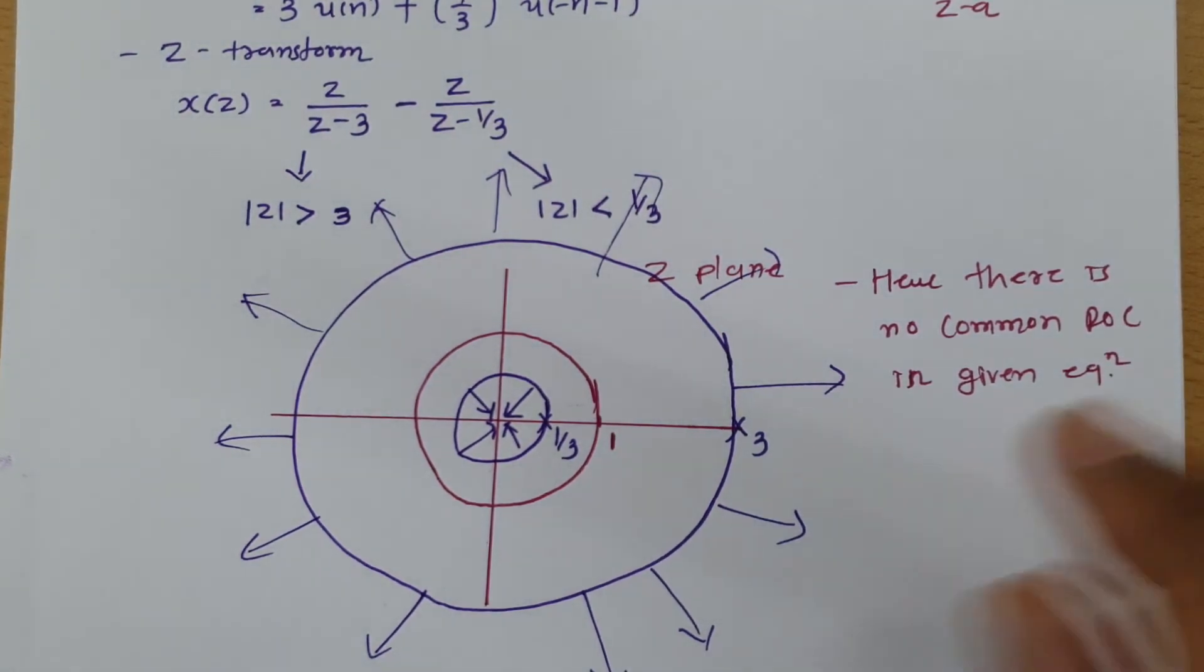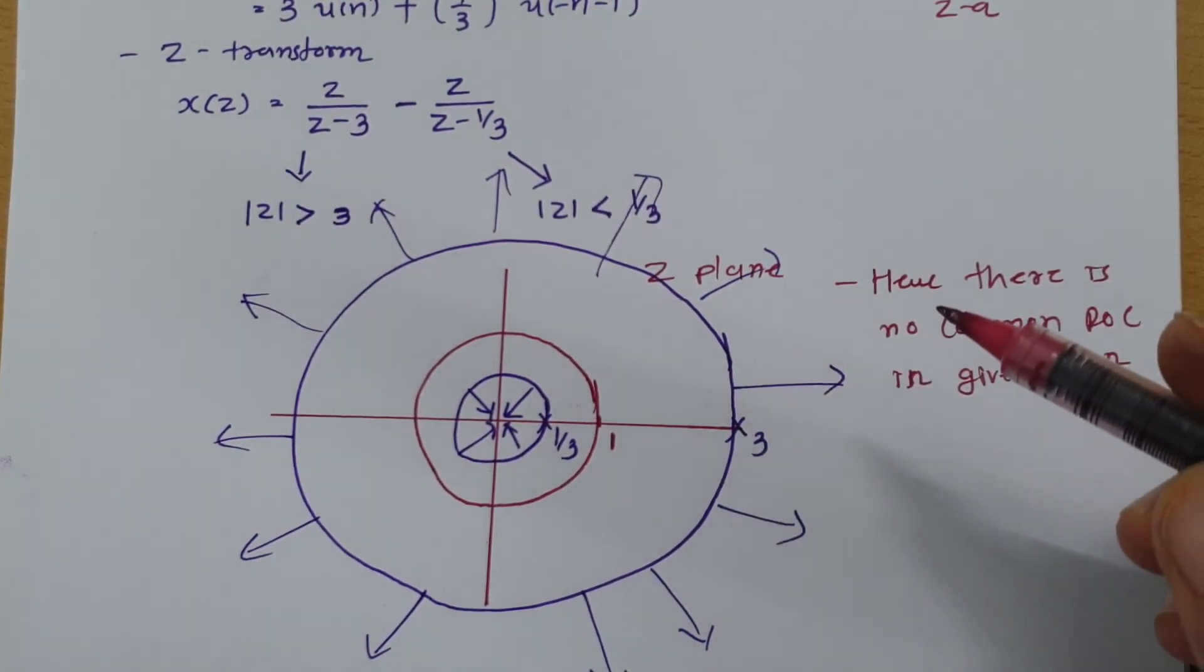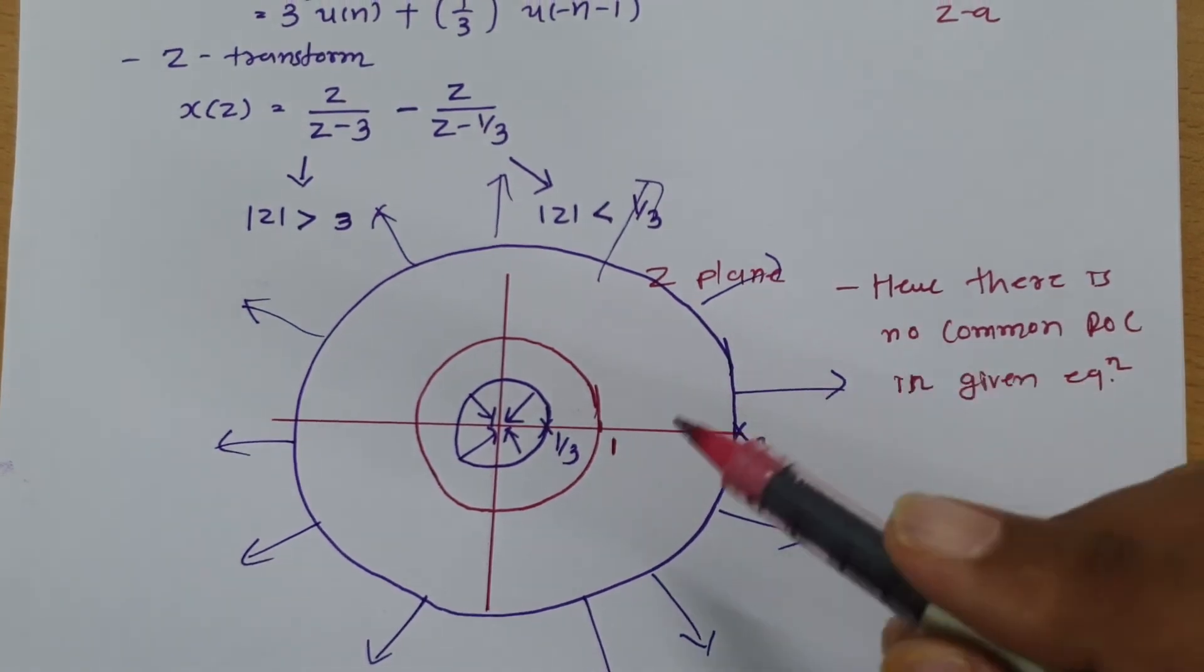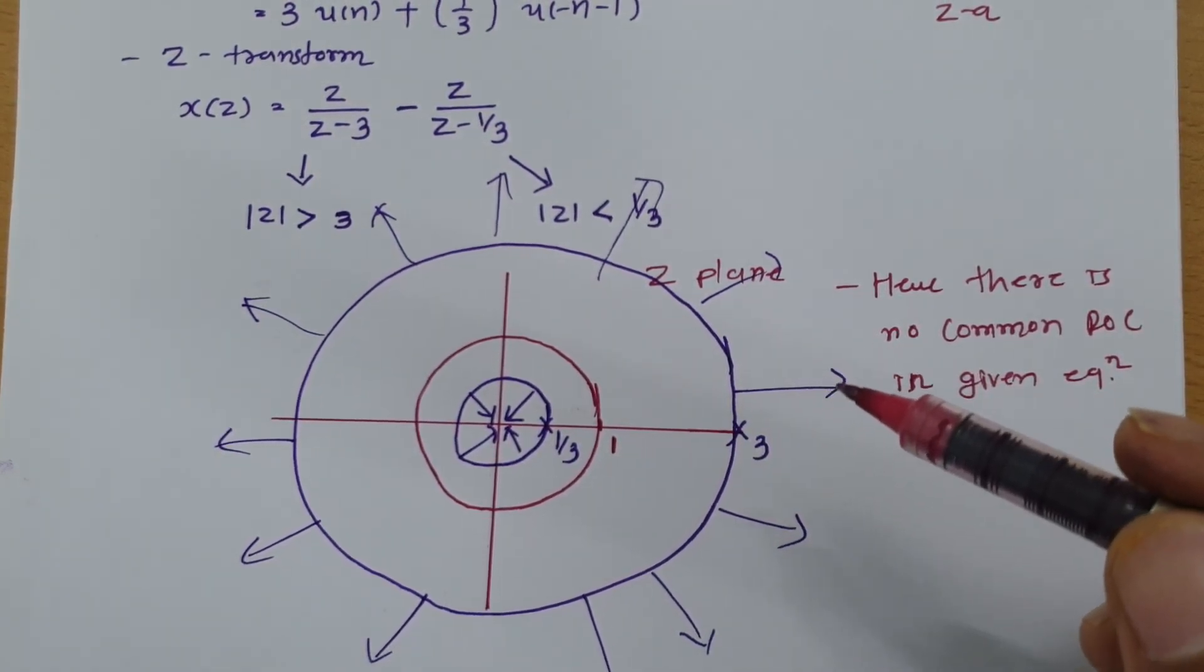Ultimately, there is no common ROC, so one can say ROC is empty, there is no ROC. And as ROC is empty, we cannot justify stability and causality of this given problem. If you have common ROC, then one can justify stability and causality.